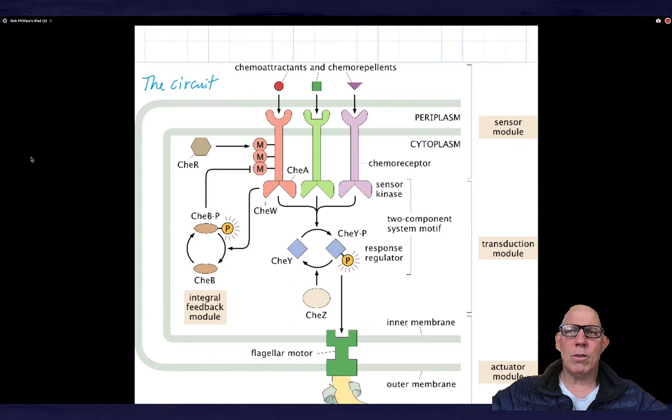I forgot to mention last time that we can think of this circuit as being built up of three distinct modules. There's the sensor module shown at the top, which is the interfacing of the cell with the external world. It's the place at which the cell detects the presence of chemoattractants or chemorepellants. There is then the transduction module. And that is the signaling, the internal signaling within the cell, which in this case takes the form of CheY. And if CheY is phosphorylated, then it goes down to the motor and tells it to change its orientational rotation direction. And finally, there's the actuator module shown at the bottom, and that's the motor itself. And then there are these other pieces of the story shown on the left, which is the equipment of adaptation, both the CheB and CheR, which are responsible for methylating and demethylating these receptors.